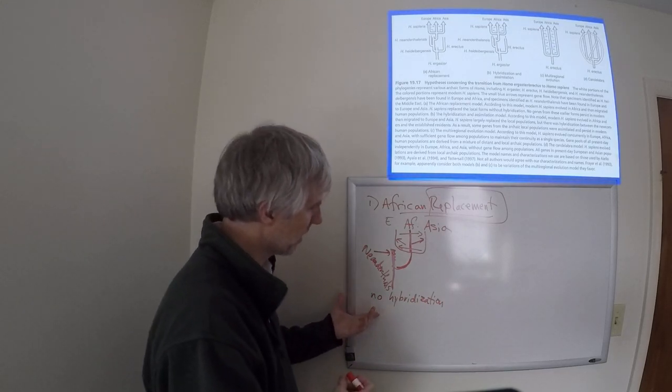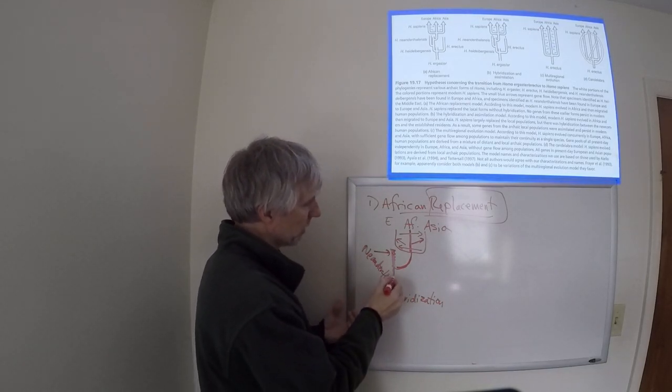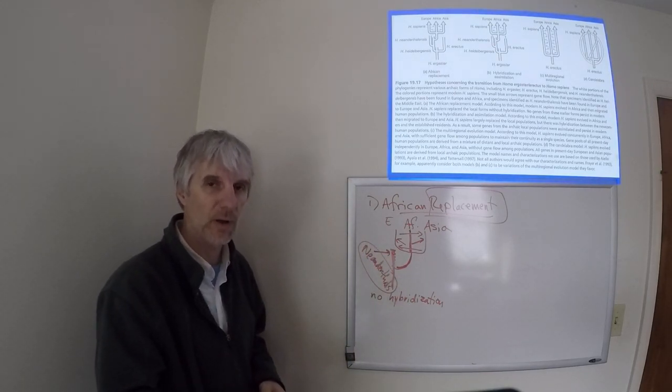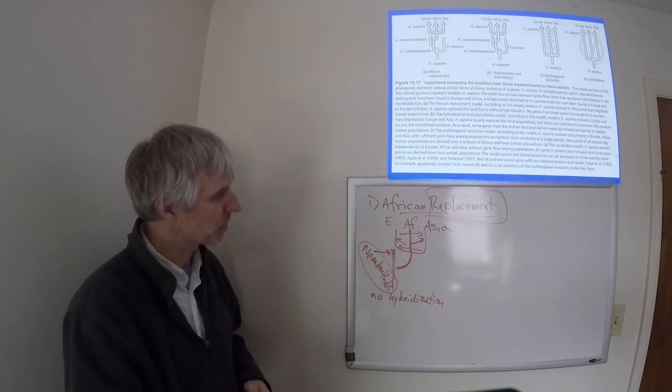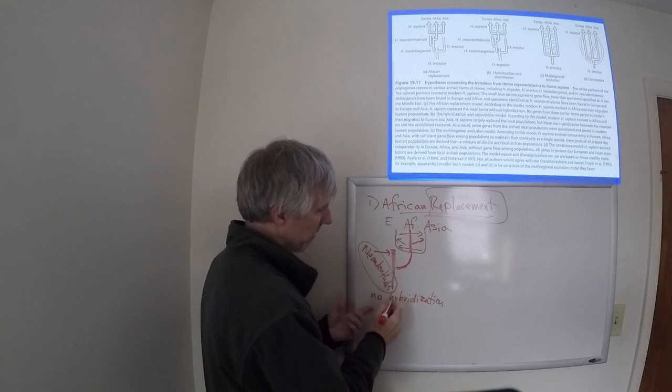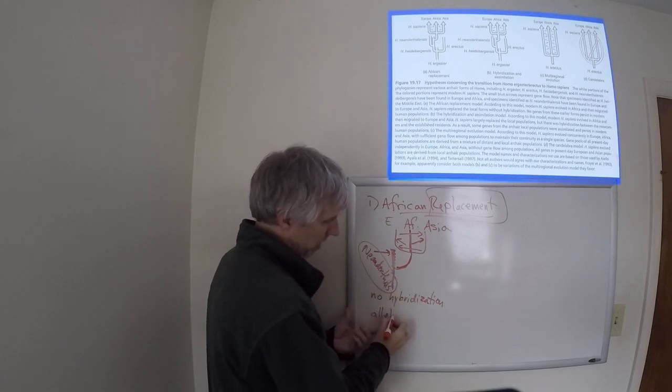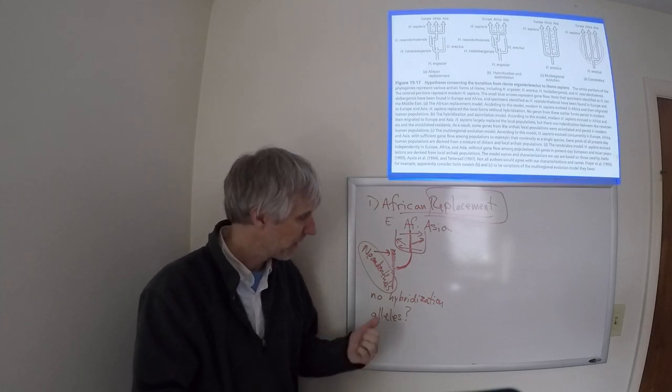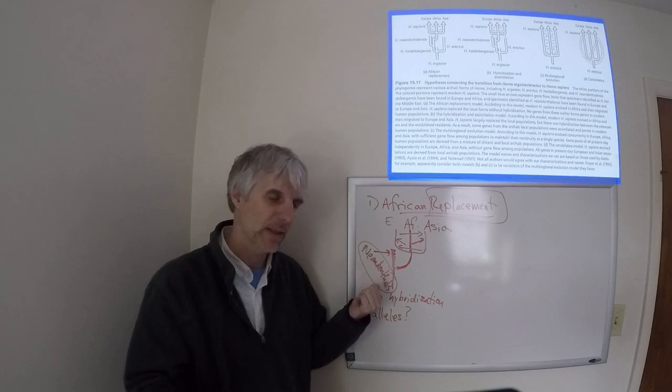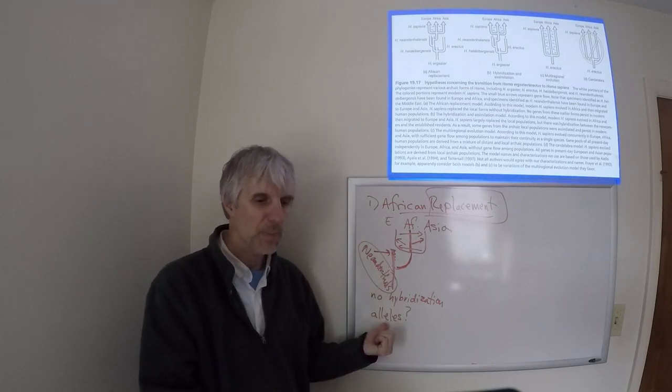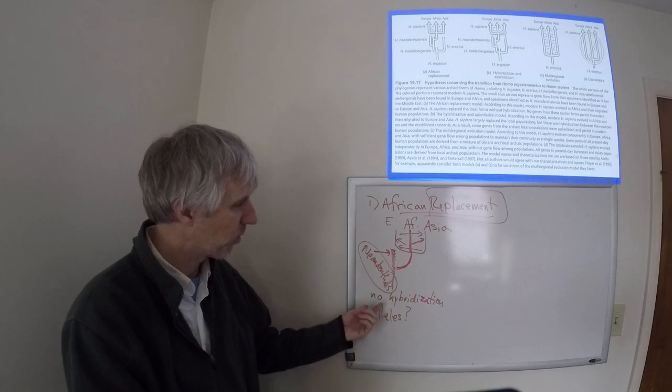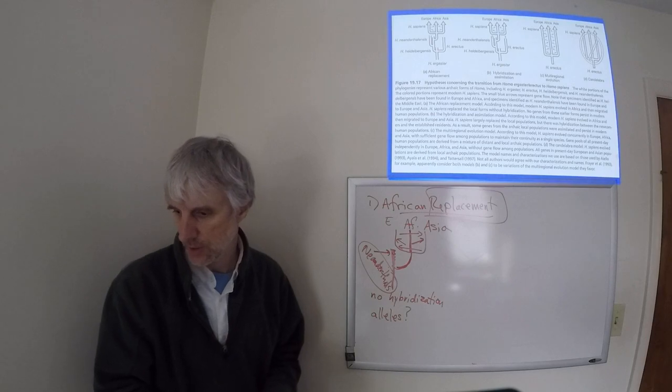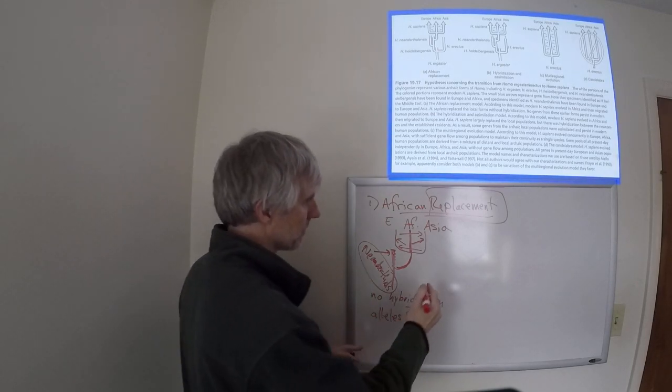Now, the way we could test this is we could get some alleles from Neanderthals. I'll show you in a second. We do have Neanderthal DNA. But we could get some alleles from Neanderthals and look to see if these alleles are also present in modern-day Homo sapiens. If we can find some Neanderthal DNA that also occurs in Homo sapiens, then we could make the argument that there was some hybridization. Absent those alleles, we would argue there's no hybridization.